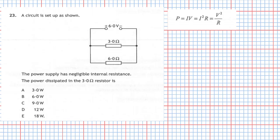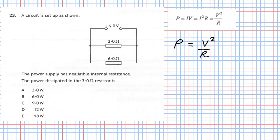There are three power equations: P = IV, P = I²R, and P = V²/R. Looking closely at the 3 ohm resistor, it's connected across a 6 volt supply, so I have both the voltage and the resistance. I'll use P = V²/R, because I have a voltage across the resistor and the value of the resistor.